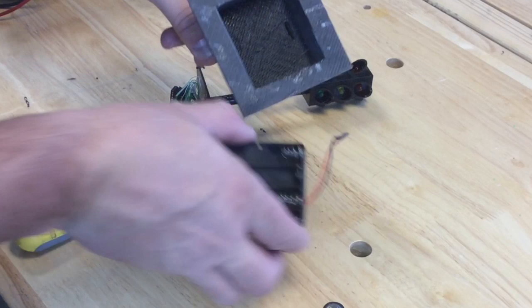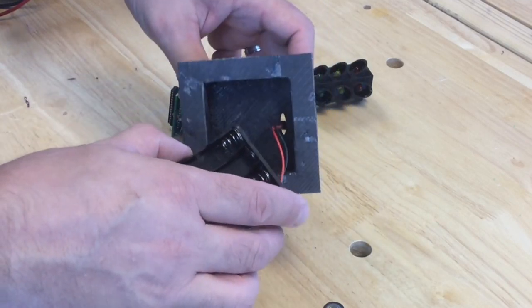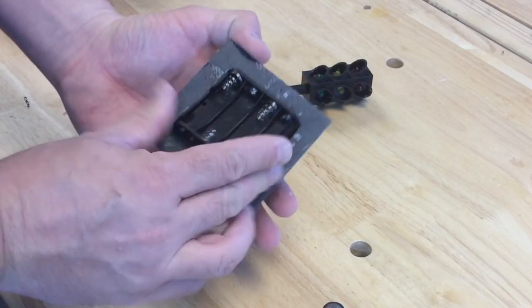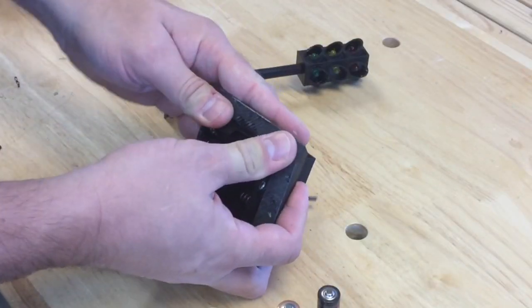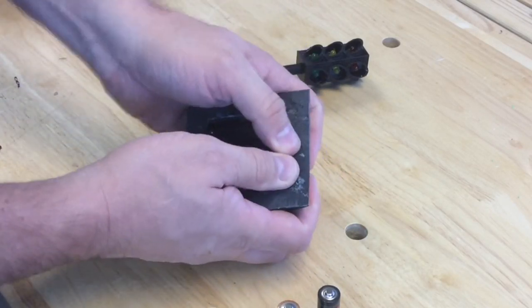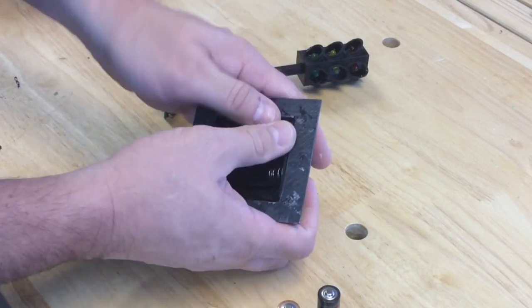So now I'll take the battery pack, and I'll feed the wires through the hole. And then I have to push this battery pack into the base. And it fits pretty tight, which is a good thing. Because once it's in place, it's not going to fall out. And this battery pack is designed to hold the batteries, so they won't fall out, even though it's upside down.